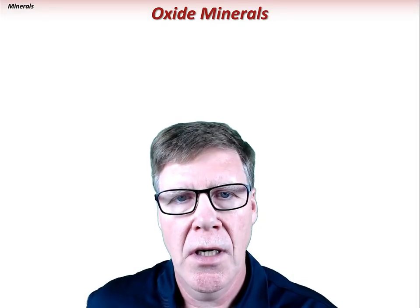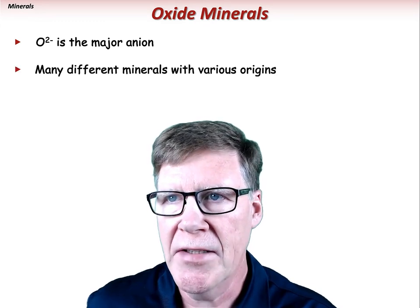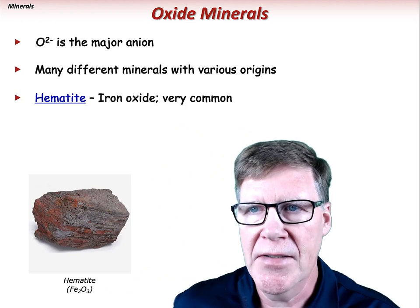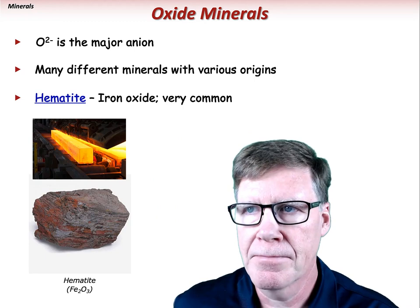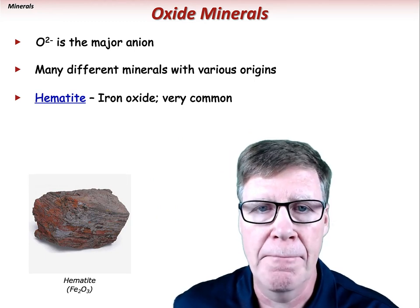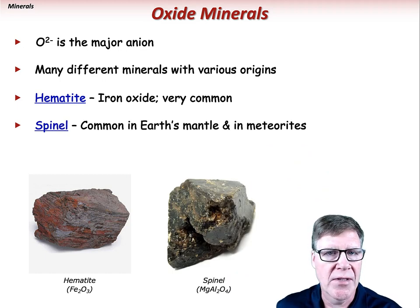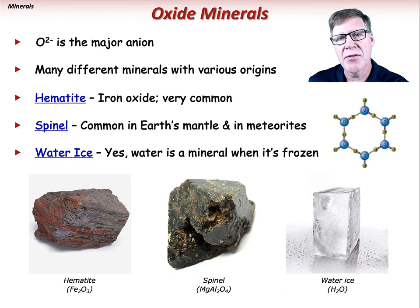In the oxide group, oxygen is the major anion. Oxides include many different minerals with various origins. Hematite is an iron oxide that is very common and an important economic ore mineral, ranging from silvery gray to blood red in color. Spinel is an important oxide mineral common in Earth's mantle and in some meteorites. Finally, water ice is an oxide mineral with a hexagonal crystalline structure.